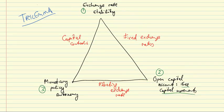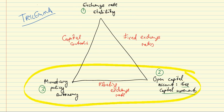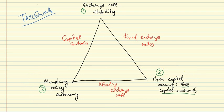Then we'll talk about what the system looks like since the 1970s, when the world moved largely from fixed exchange rates to floating exchange rates, so that countries would have monetary policy autonomy together with open capital accounts but would have to give up exchange rate stability. With this brief classification, let's move on to the Bretton Woods system.